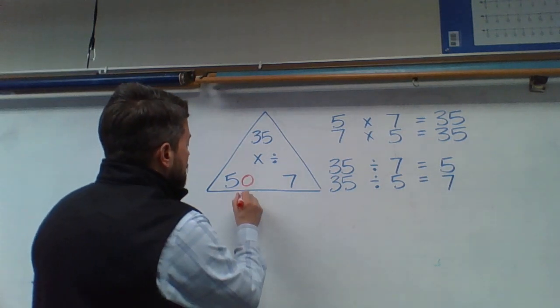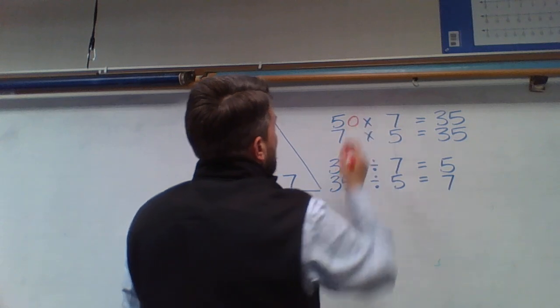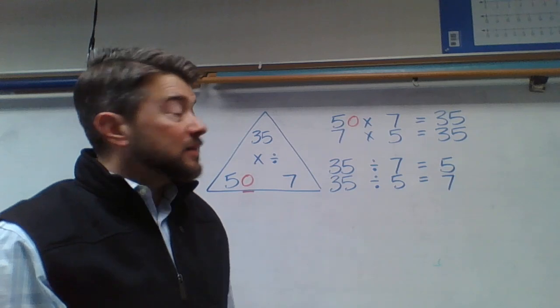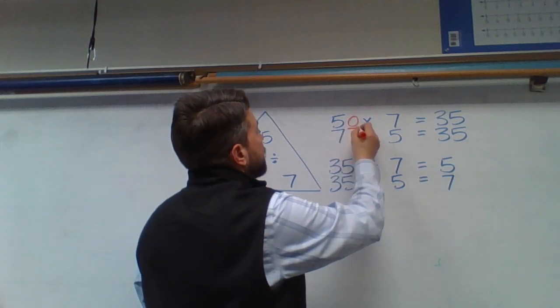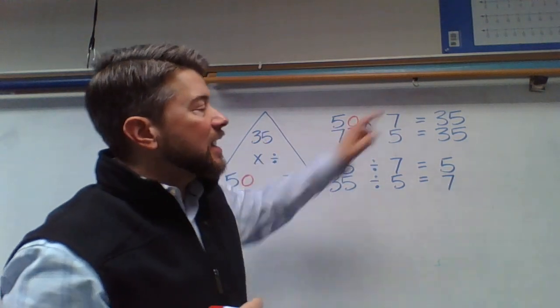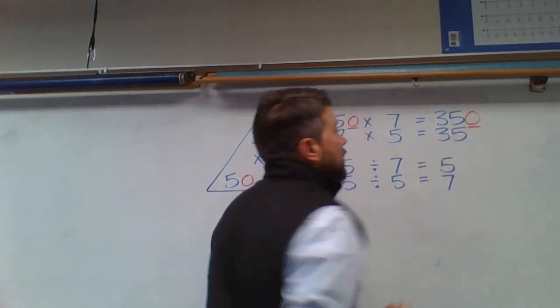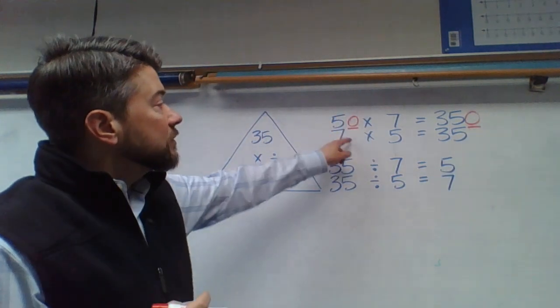By doing so, I have to add a 0, or multiply my answer, the product, by 10 as well. So if it's 5 tens times 7, I'm going to get a total of 35 tens, otherwise known as 350. And the reverse would be true.